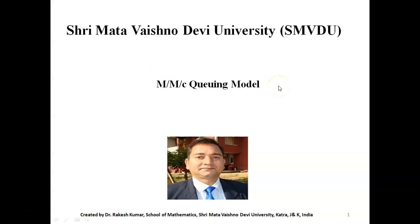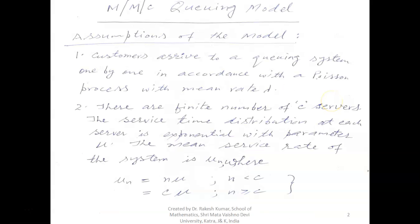Hello friends. Now we will start the M/M/C queuing model, that is a multi-server queuing model. The assumptions of the model are: customers arrive to a queuing system one by one in accordance with the Poisson process with mean rate lambda.